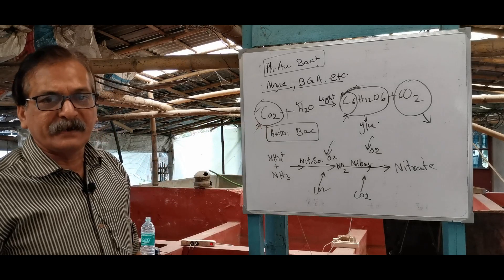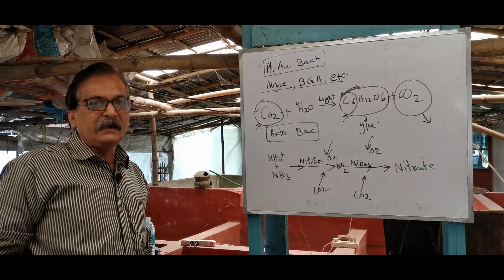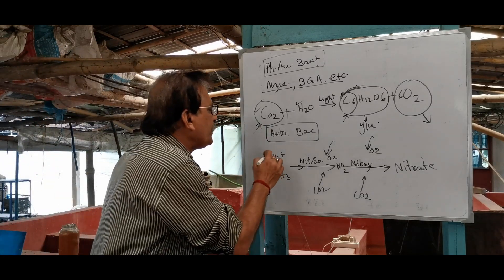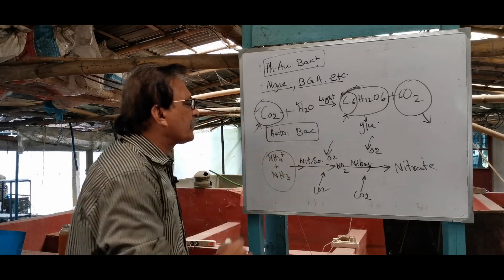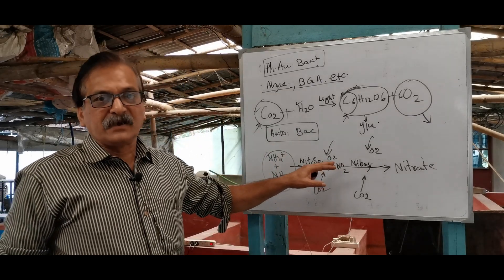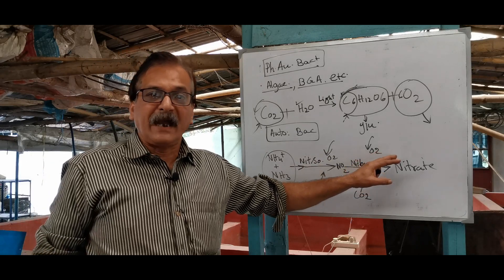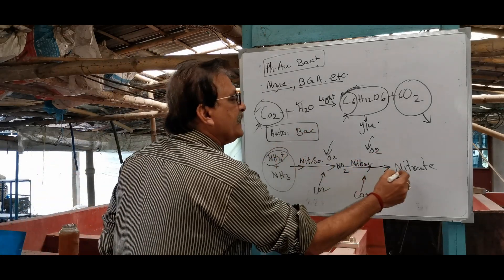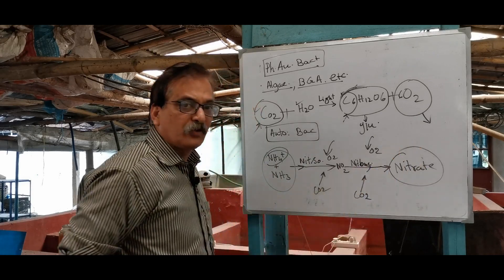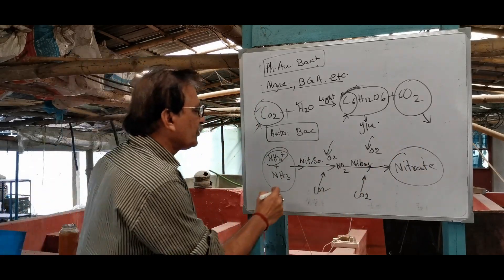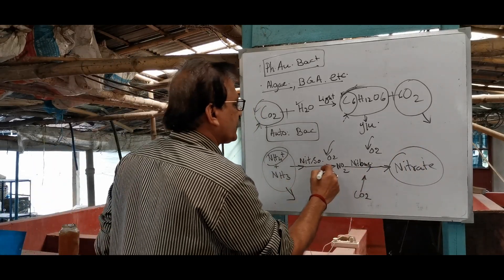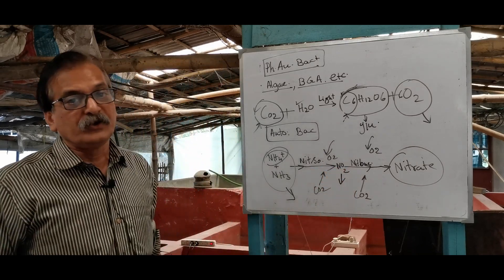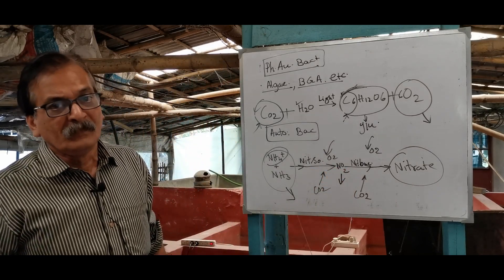The second part is the autotrophic bacteria. We know the autotrophic bacteria. Ammonium by ammonia — nitrite, nitrite. Ammonium and nitrite are not good.